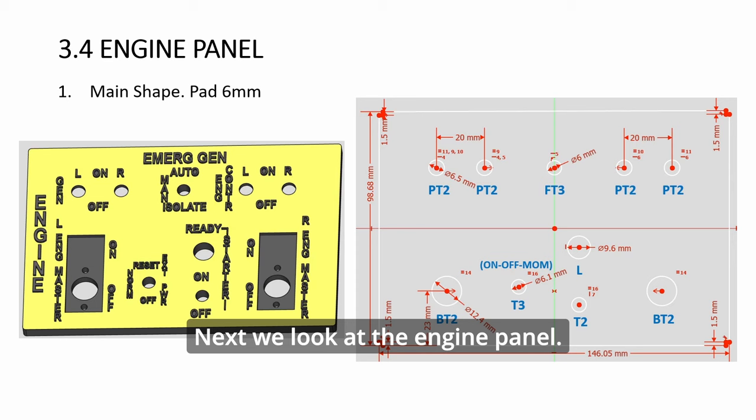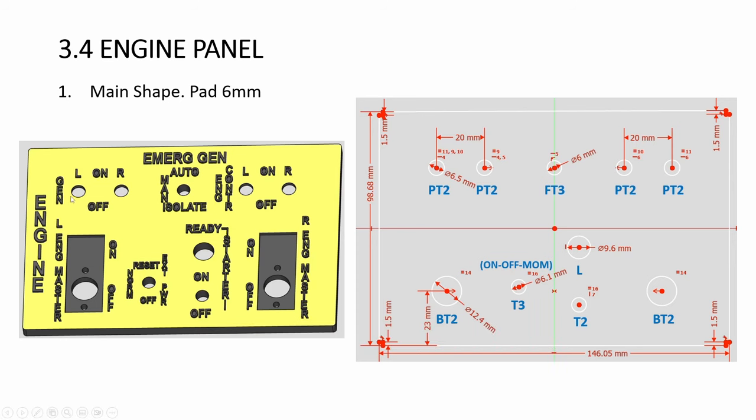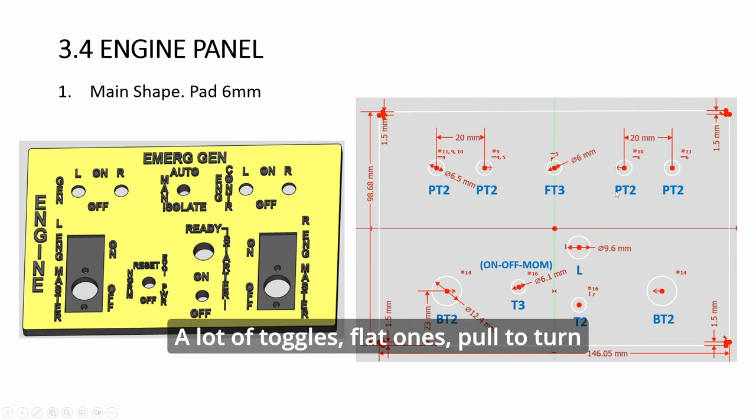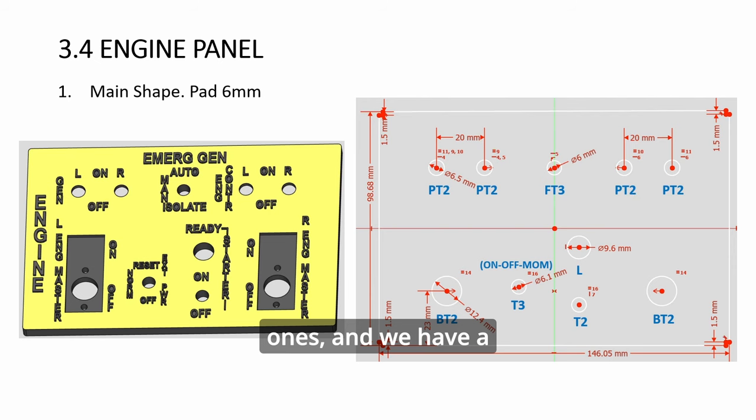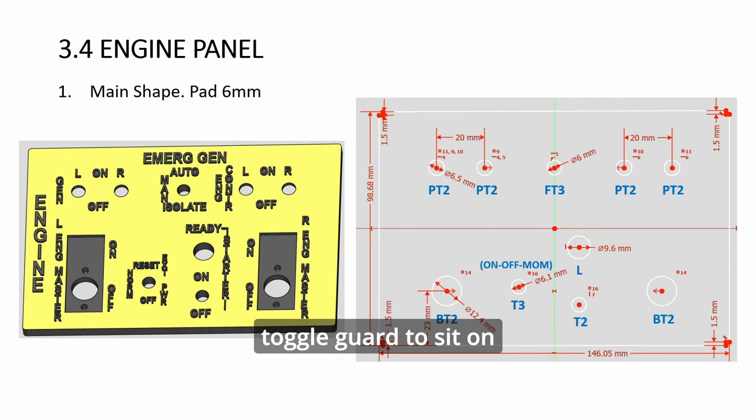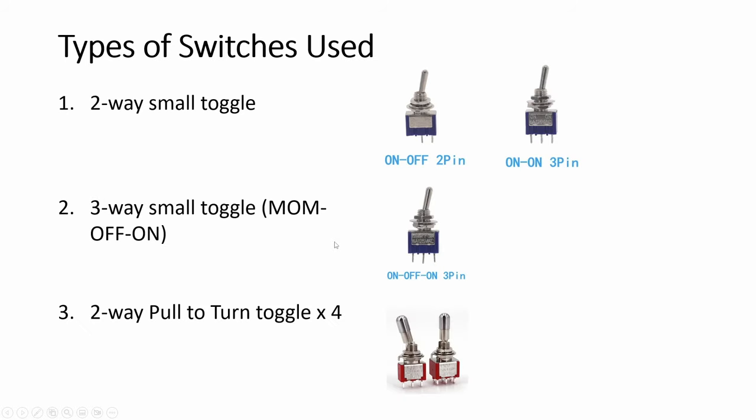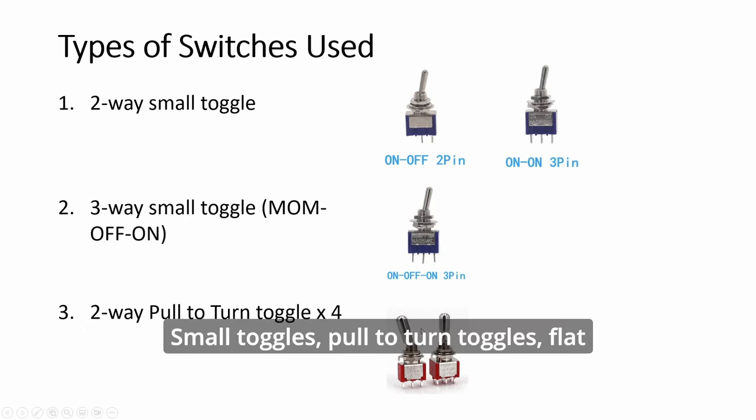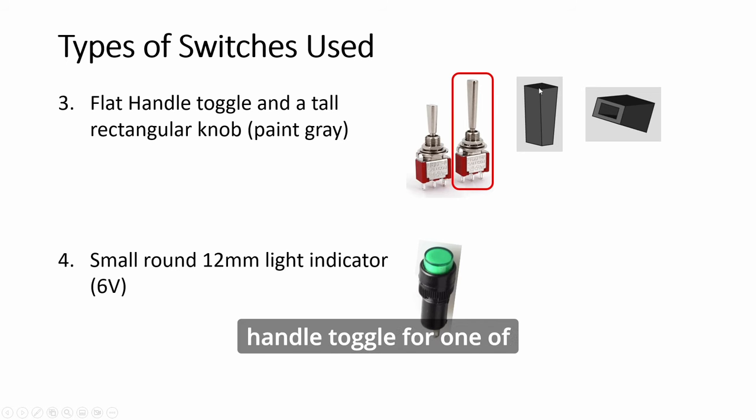Next we look at the engine panel. This is an interesting panel. A lot of toggles, flat ones, pull to turn ones and we have a light indicator here as well. Luckily this is working now. And then you need a top recess for the toggle guard to sit on. And then the holes here to lock the toggle. Small toggles, pull to turn toggles, flat handle toggle for one of the switches in the middle and a light indicator.